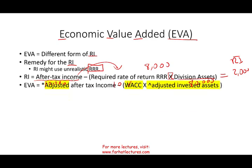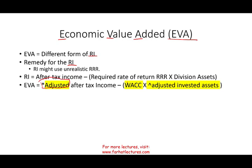When we compute Economic Value Added, it's the same concept with slight adjustments. Rather than using after-tax income, we use adjusted income. Rather than the required rate of return or hurdle rate, we use WACC — weighted average cost of capital. And rather than division's assets, we use adjusted invested assets. So we make adjustments to income, to the rate, and to division assets to find EVA.